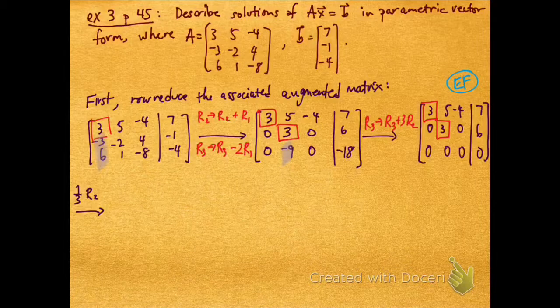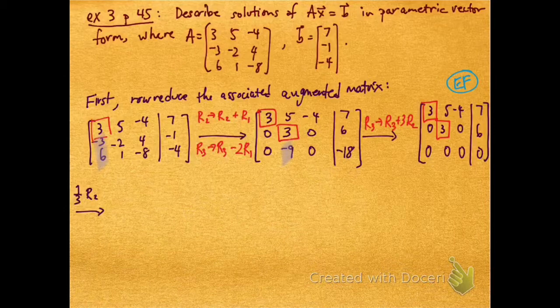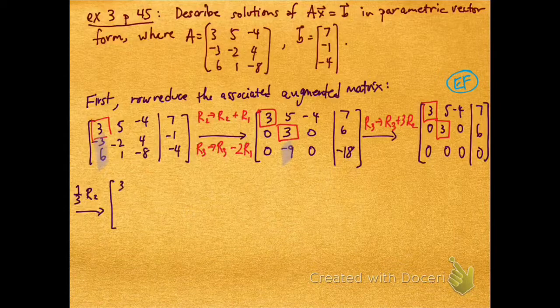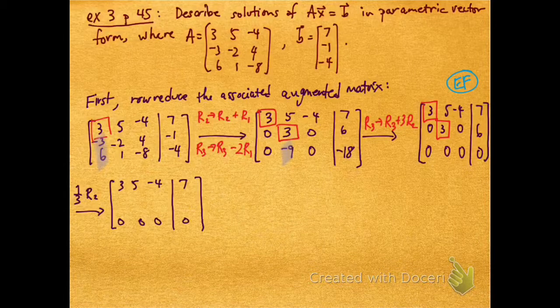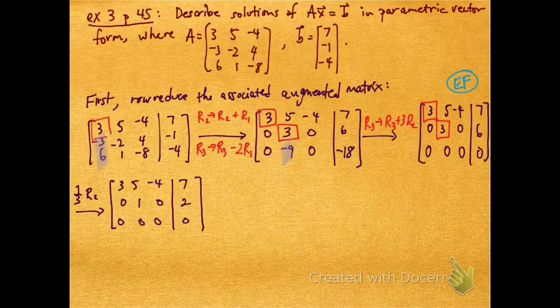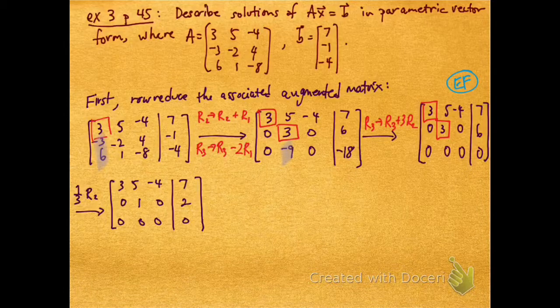So I start with the rightmost pivot, which is this 3. I'm going to turn it into a 1 by multiplying row 2 by 1/3. The first row and the third row stay the same, and the second row becomes 0, 1, 0, 2.